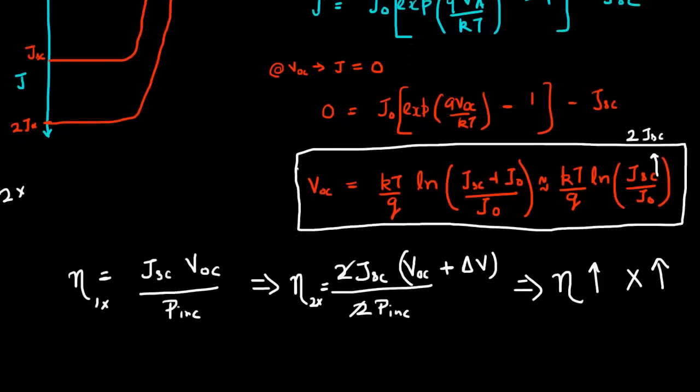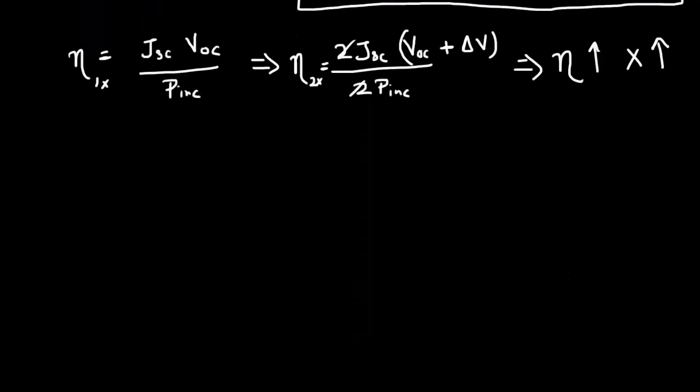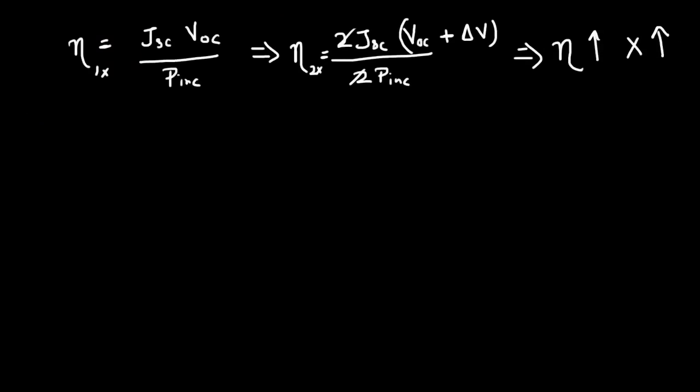But there are some caveats to this. So what I've assumed in this analysis is that my temperature of the cell did not vary. Typically if you have a very large current flowing or if you have a very large intensity of light which is incident on your cell, your temperature can increase, and that results in a decrease in the efficiency. That will be a subject of another video.